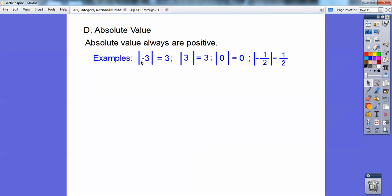For example, the absolute value, and this is how you say absolute value with these bars right here, the absolute value of negative 3 is positive 3. The absolute value of positive 3 is also positive 3. The absolute value is 0 is 0. The absolute value of negative one-half is positive one-half. It's always the positive number that's inside of the absolute value sign.